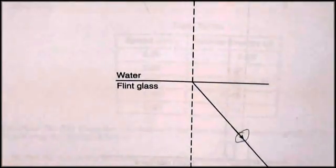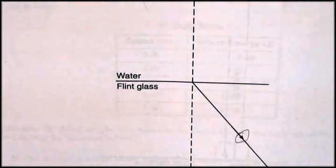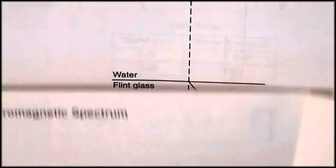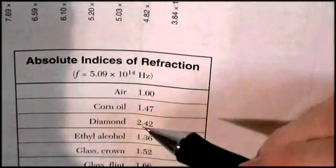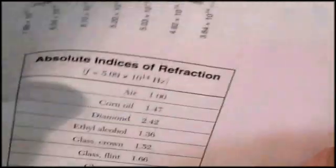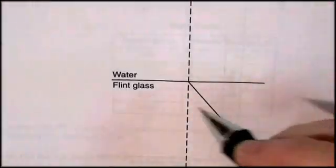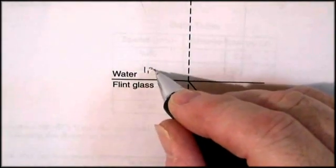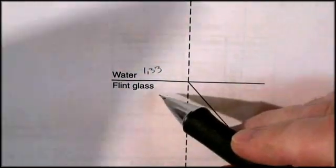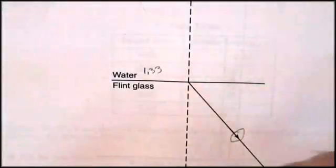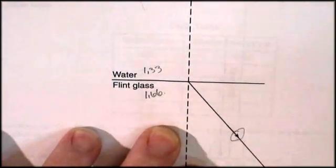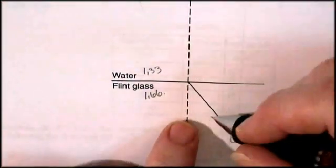Well, water and flint glass, let me tell you what I'm going to do first. I'm going to look up the index of refraction. And on my formula sheet, I have the absolute index of refraction. And for water, the absolute index of refraction is in fact 1.33. And going into flint glass, flint 1.66. So it's going into a higher index of refraction.